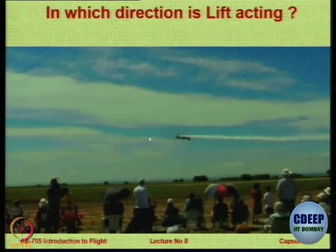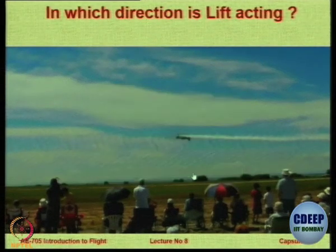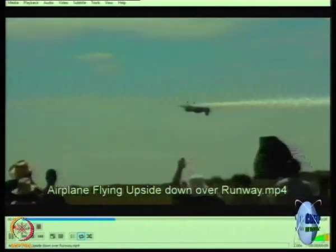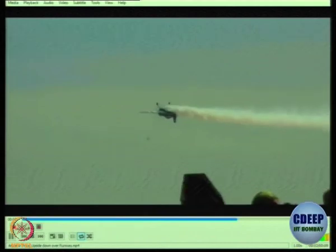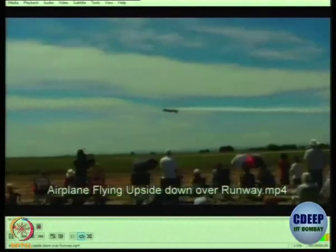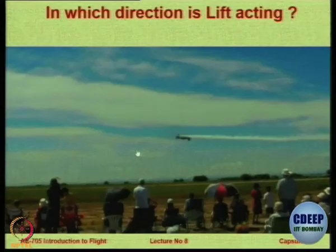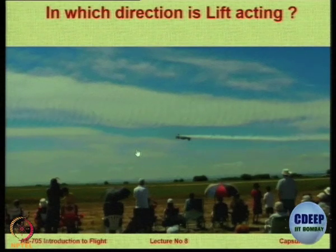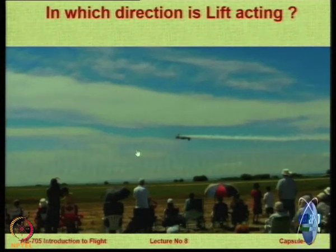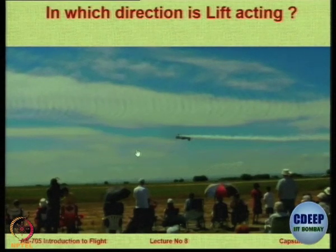Another example: if an aircraft is flying upside down inverted, the equal time theory would predict lift is downward, so the aircraft should keep coming down and cannot maintain level flight. But interestingly, even when flying inverted, the lift is still upward, overcoming weight — and that cannot be explained by the equal time theory.